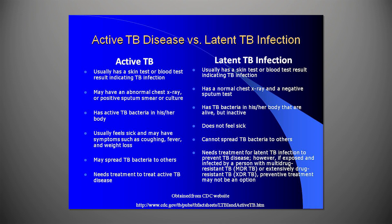Tuberculosis of the lungs usually results in no or minimal symptoms in its early infection stages. In most people, the primary infection is contained by the body's immune system, and the lesion, called a tubercle, becomes calcified so the person does not become sick and cannot pass the infection on to others.